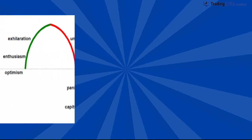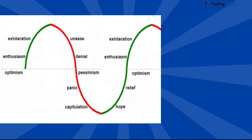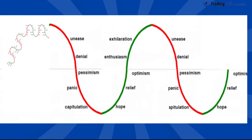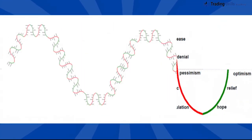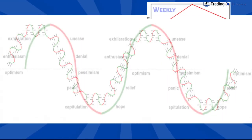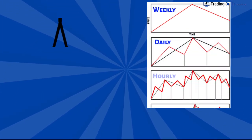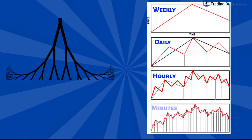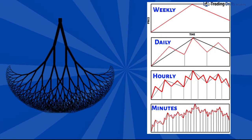and short to long term reward expectations and sentiments, this makes the price movement exhibit a wave shape pattern. Each wave cycle is repeated throughout different timeframes, similar to fractal patterns seen in nature.